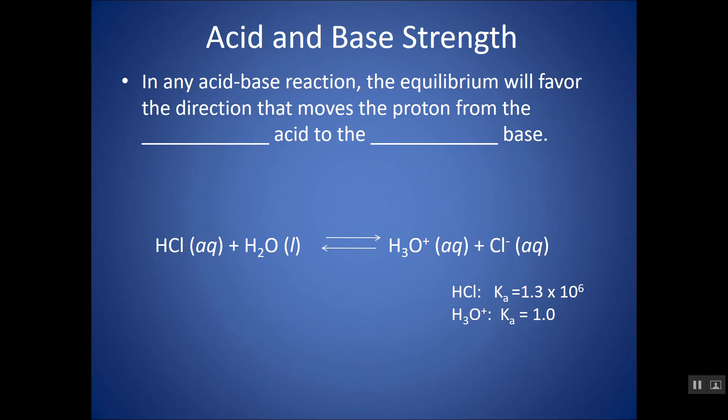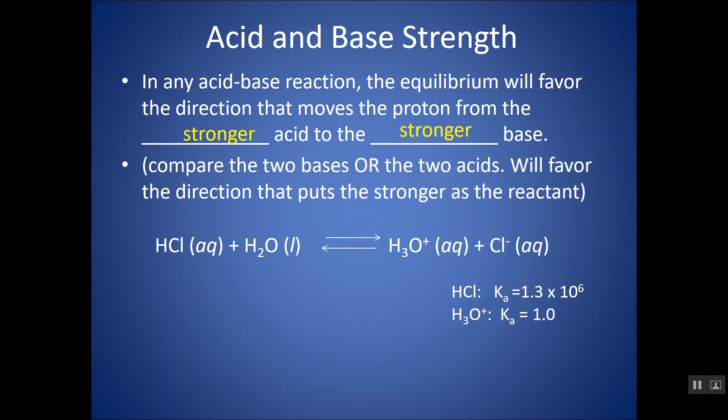In any acid-base reaction, the equilibrium will actually favor the direction that moves the proton from the stronger acid to the stronger base. So if they ask you which direction is favored, either compare the two bases or the two acids, and the reaction will favor the direction that puts the stronger as the reactant. For instance, if here's a reaction, and I want to know, does equilibrium lie to the left? Does it favor the reactants, or does it favor the products?